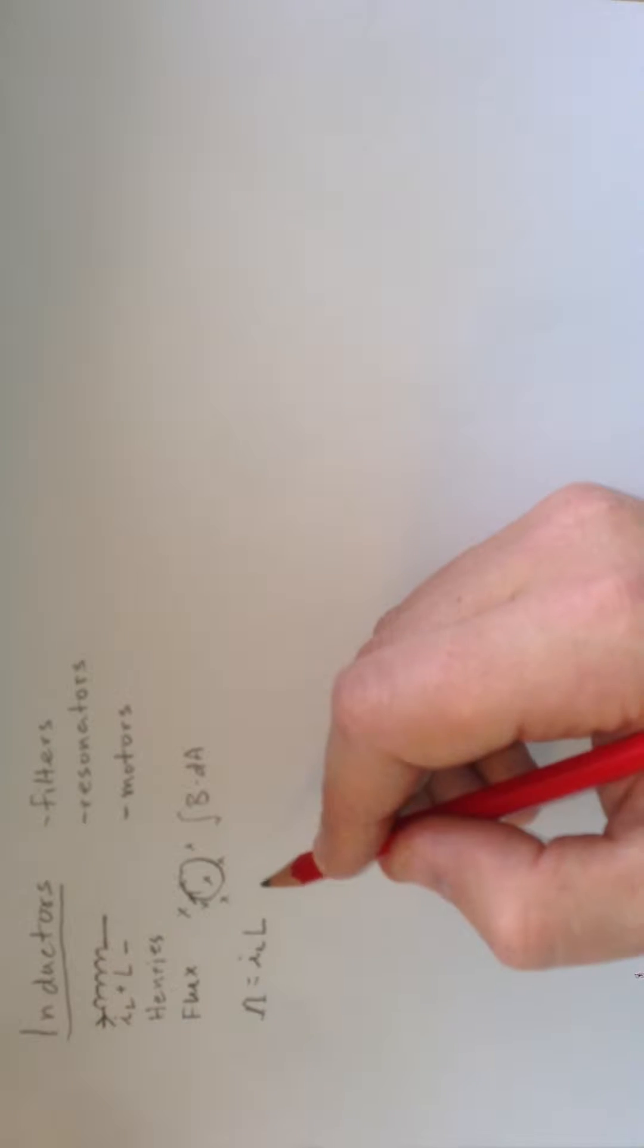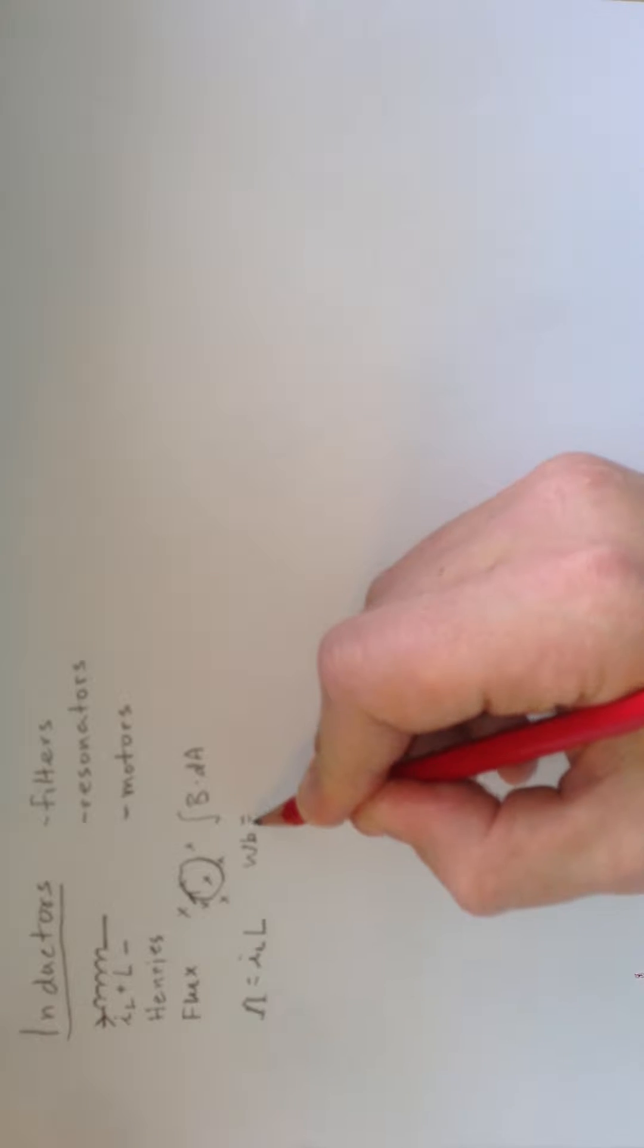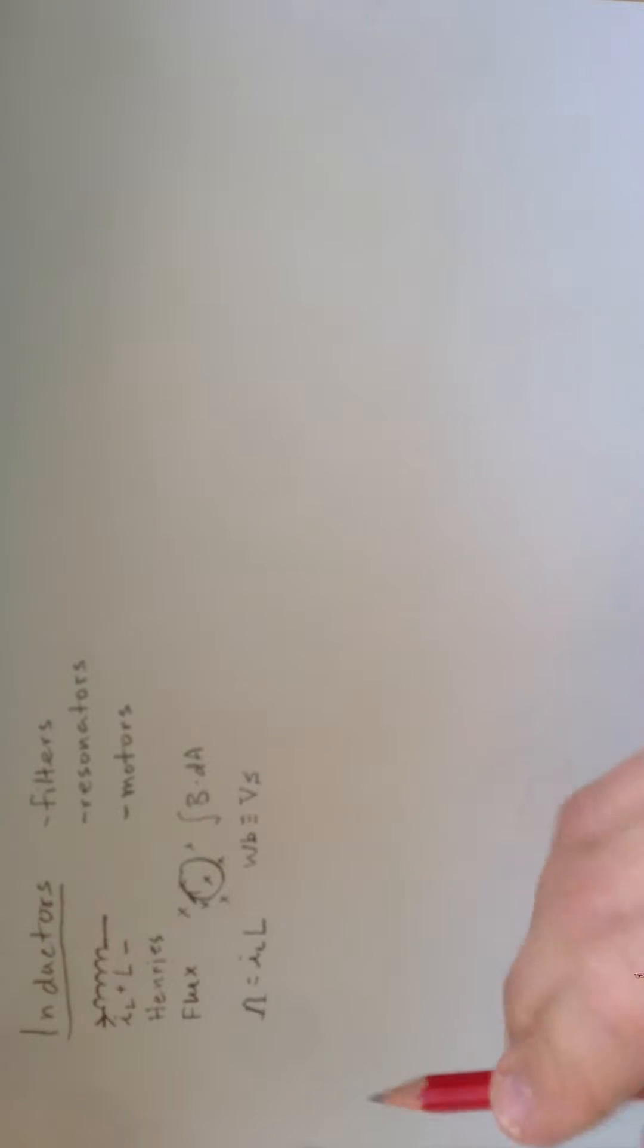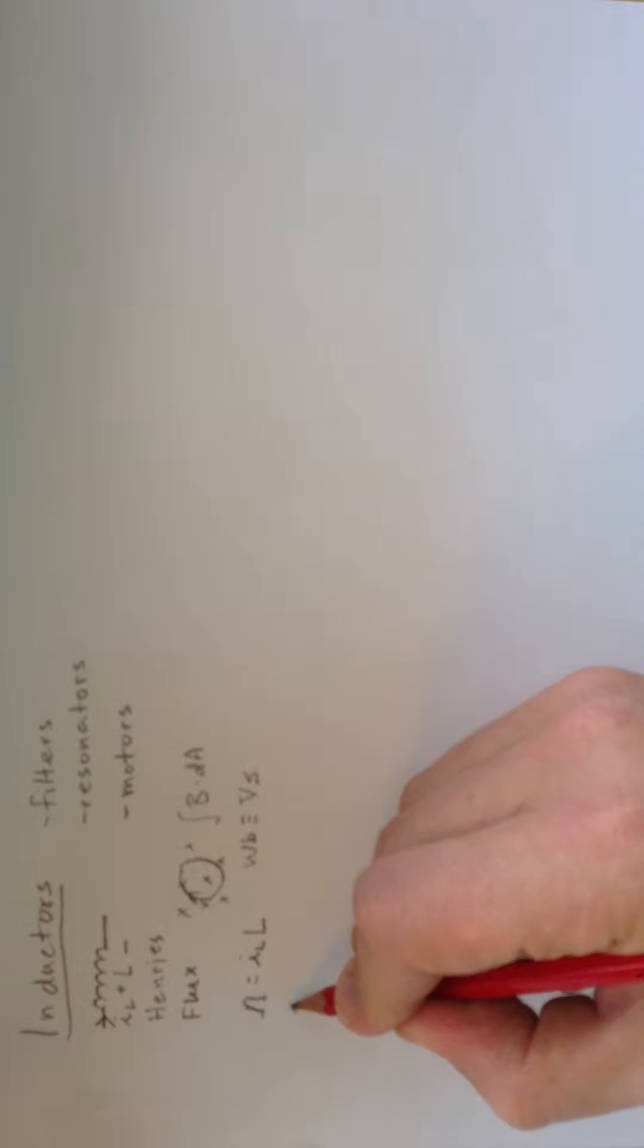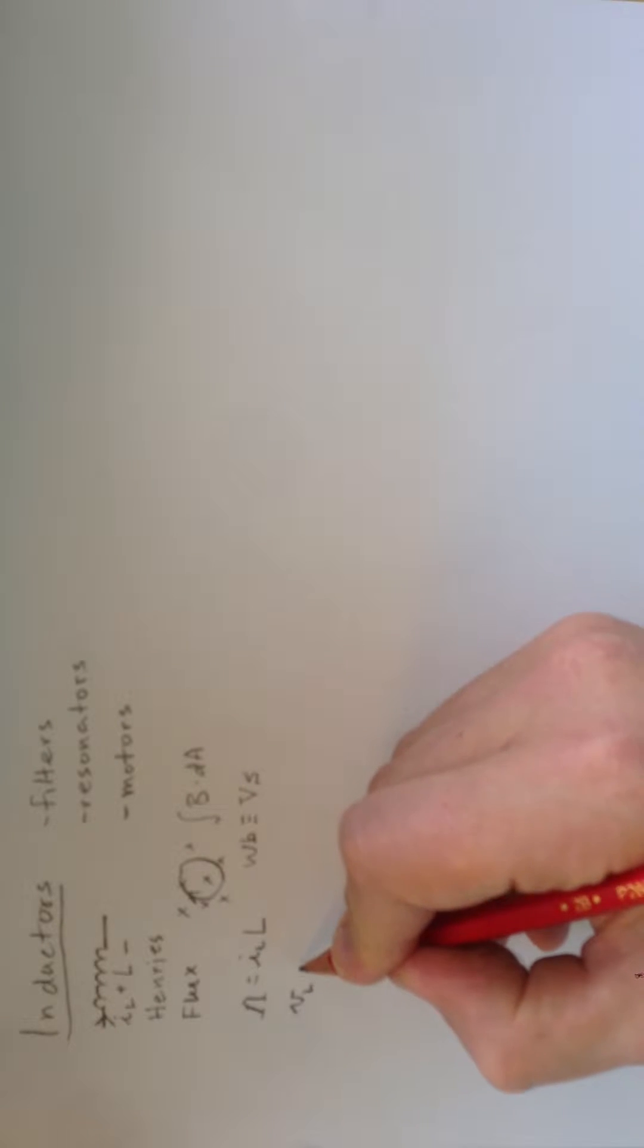So, if you remember the units of flux from your physics classes, it's Weber's, which is equivalent to volts times seconds. The voltage comes into play here as the time derivative of the flux.